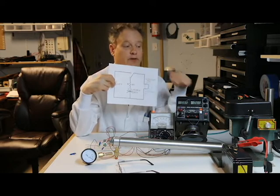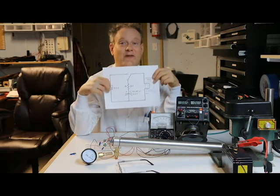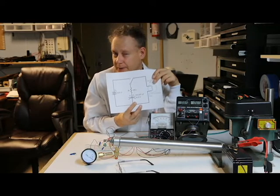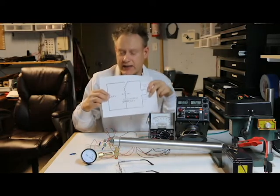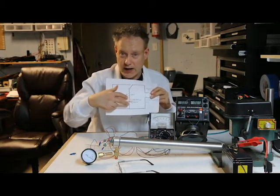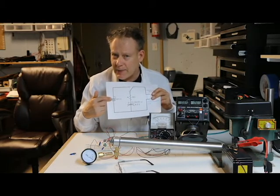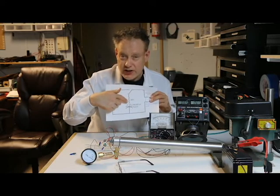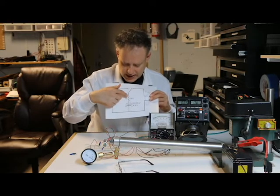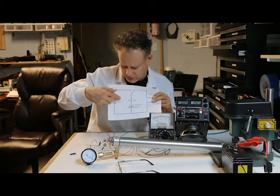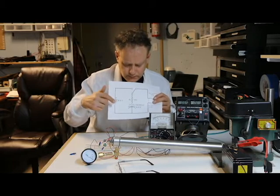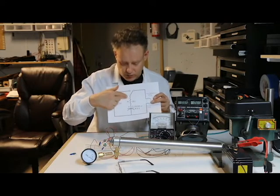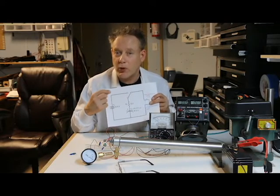Our variable DC power supply is set to 6.5 volts. This is a 6.3-volt capacitor. What I did was I tested it — I put my DMM over this and turned it up until I could get just under 6.3 volts going into the capacitor, because there's a resistor in here. The current goes through the resistor and I get a voltage drop across it, so I don't get all of the 6.5 volts at the capacitor.